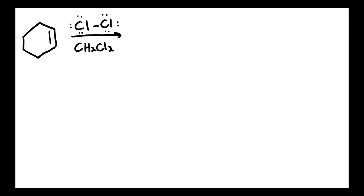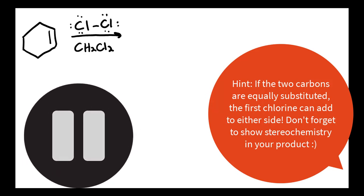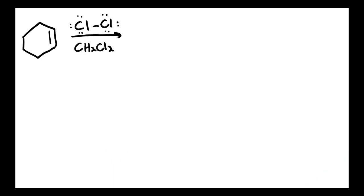Here we've got another example of halogenation — feel free to pause the video so you can check your work. The first step is to confirm that we are indeed dealing with halogenation. We've got an alkene, we're reacting it with Cl2, and we're going to confirm that we have an aprotic solvent — and we do, we've got CH2Cl2. The first step is the double bond is going to attack one of the chlorines, and then the bond between them will break and go to the second chlorine. You may notice that they are equally substituted, so it doesn't really matter to which side you want to add the first chlorine.